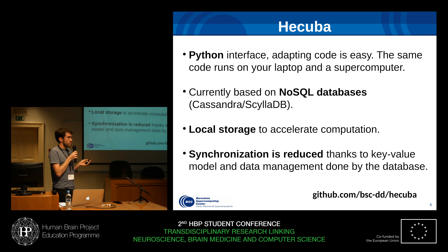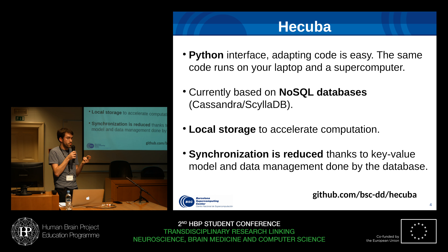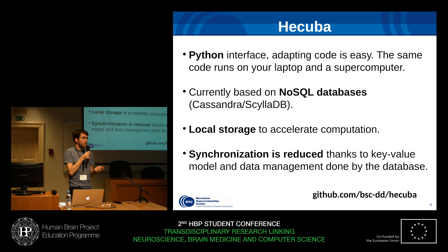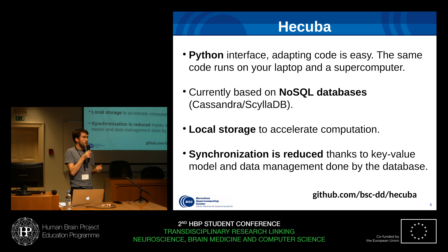Our use case was based on a parcellation of an MRI image, and each one was analyzed. To provide a solution for this, we propose at the VSC a system which is a Python interface, so it's very easy to use for all the people that are working with Python, because it's something very fast to code. It's based on NoSQL databases, which provides very nice features such as coherence, and they avoid data corruption. You can access the results from many computers, and they can distribute the data among different nodes. We also make use of the local storage that is in between the hard disk and the main memory, which is really, really fast.